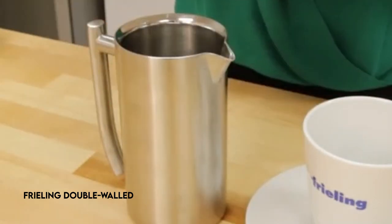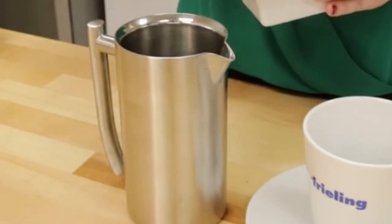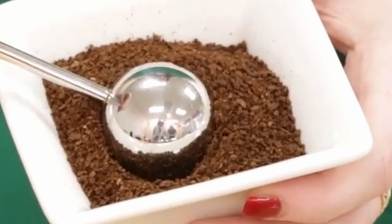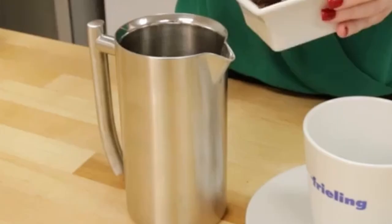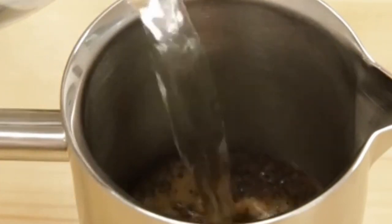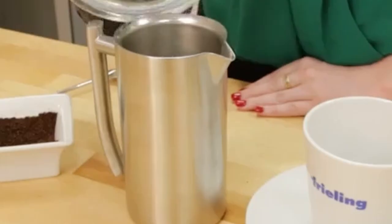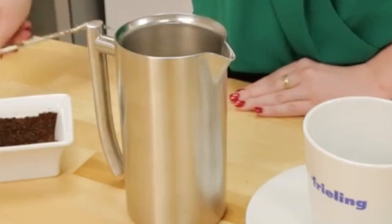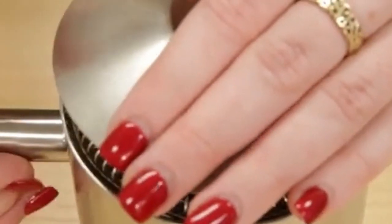On number 2, Freeling Double Walled. The Freeling French Press coffee maker is a dual-screen zero-sediment filter that ensures a smooth coffee experience with no grounds in your cup. Its innovative two-stage filtration mechanism ensures a flawless cup of coffee with no sediment.